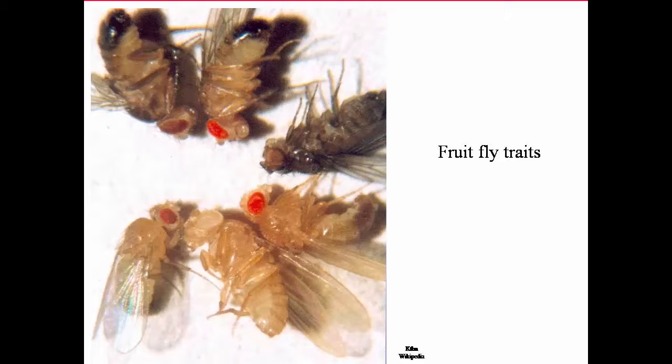cinnabar eyes, sepia eyes with an ebony body, vermilion eyes, white eyes, and you also get wild type eyes with yellow body. We're going to refer to wild type frequently.